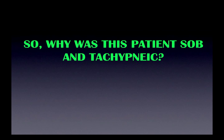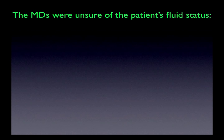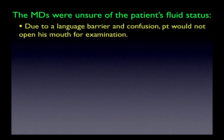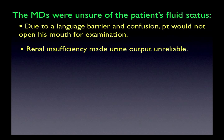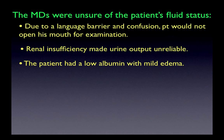Why was this patient so short of breath and tachypneic? This was discussed after the first ultrasound showed no pneumothorax and that a chest tube was not necessary. Further ultrasonography was utilized. The MDs were unsure of the patient's fluid status. The patient did not speak English, and due to a language barrier and confusion, he would not open his mouth for examination. Renal insufficiency made urine output unreliable due to baseline oliguria. The patient was somewhat edematous but also had a low albumin, so interpretation was difficult.